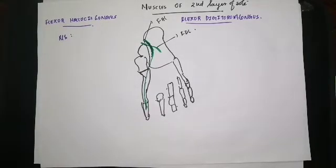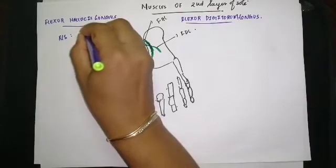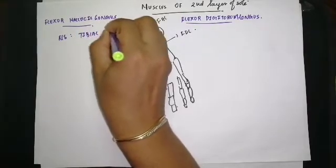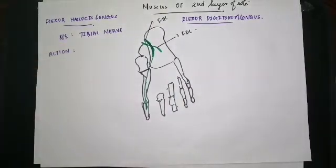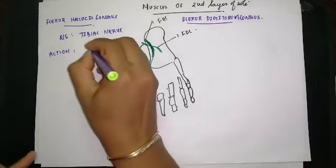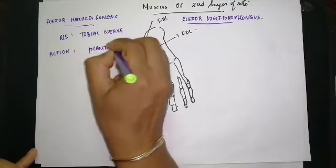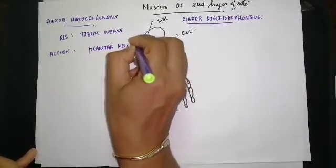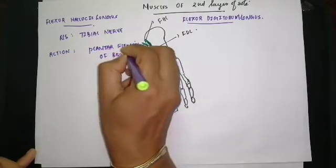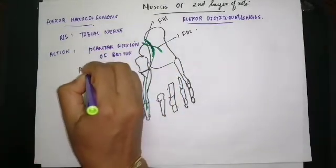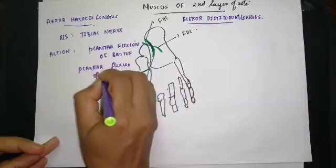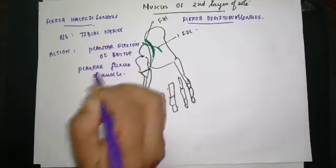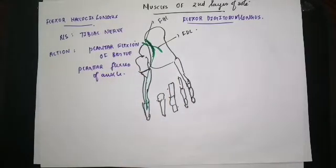The nerve supply of the flexor hallucis longus: being a muscle of the posterior compartment of the leg, it is supplied by the tibial nerve. Its action is plantar flexion of the great toe, plantar flexion of the ankle joint, and it also helps in maintaining the medial longitudinal arch.